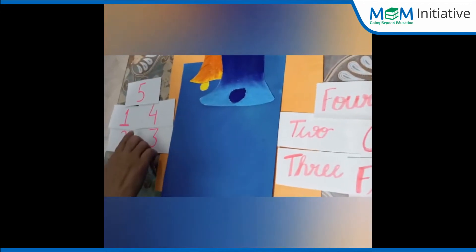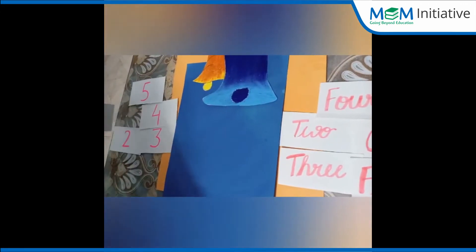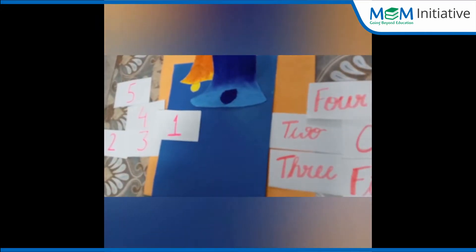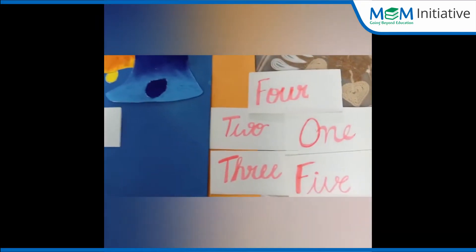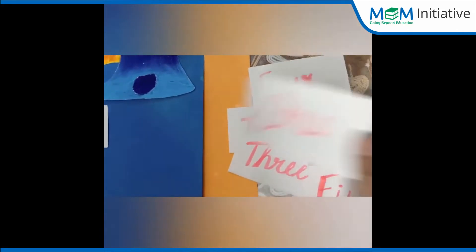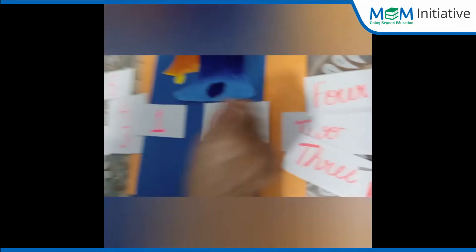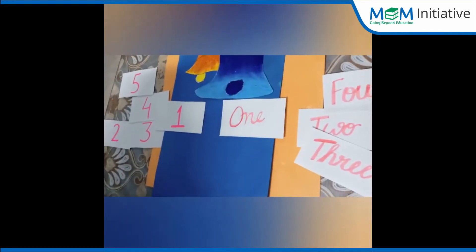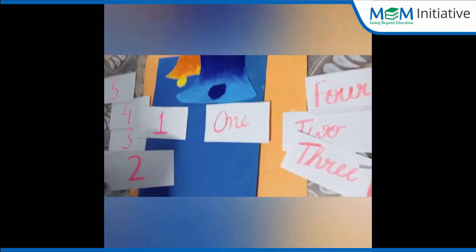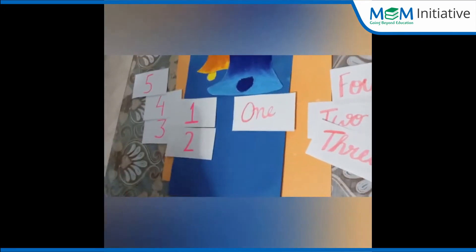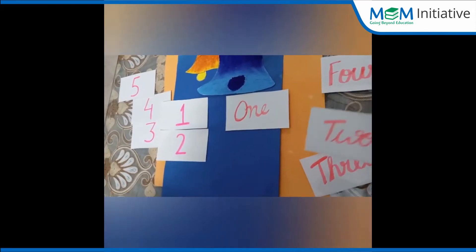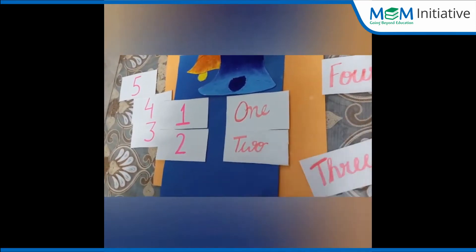Where is 1? There it is, 1. Now, where is number name 1? Let's match — O-N-E. Yes, this is number name 1. Now let me find out where is number 2. Yes, here it is, number 2. Now let me find out where is number name 2. T-W-O, 2.